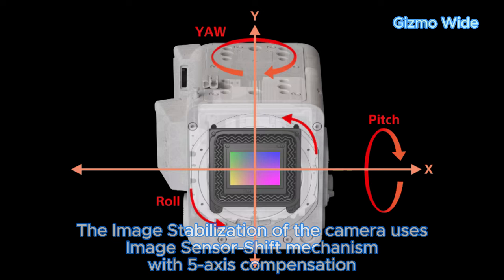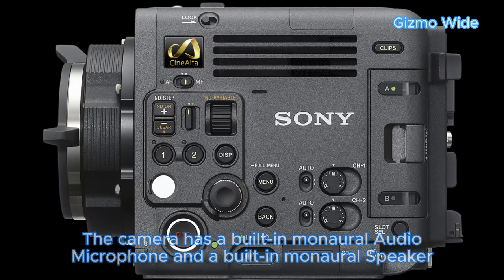The image stabilization of the camera uses an image sensor shift mechanism with 5-axis compensation. The camera has a built-in manual audio microphone and a built-in manual speaker.